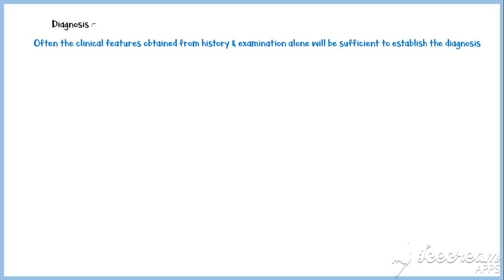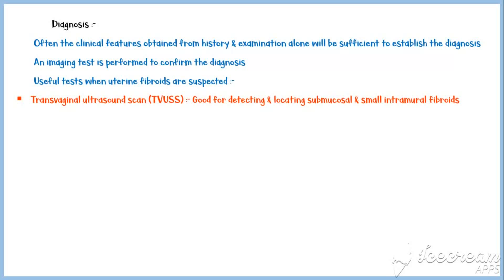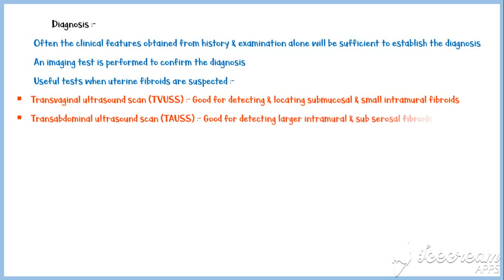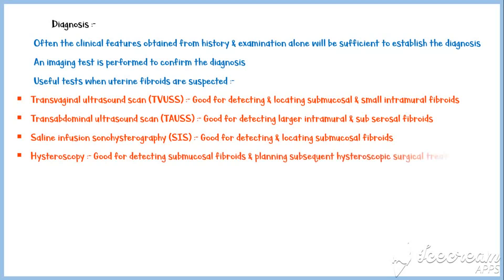Often the clinical features obtained from history and examination alone will be sufficient to establish the diagnosis. However, an imaging test is usually performed to confirm it. Transvaginal ultrasound is good for detecting and locating submucosal and small intramural fibroids. Transabdominal ultrasound is good for detecting larger intramural and subserosal fibroids. Saline infusion sonohysterography and hysteroscopy are good for detecting submucosal fibroids, with hysteroscopy also useful for planning surgical treatment. MRI scanning is good for describing the morphology and location of fibroids.